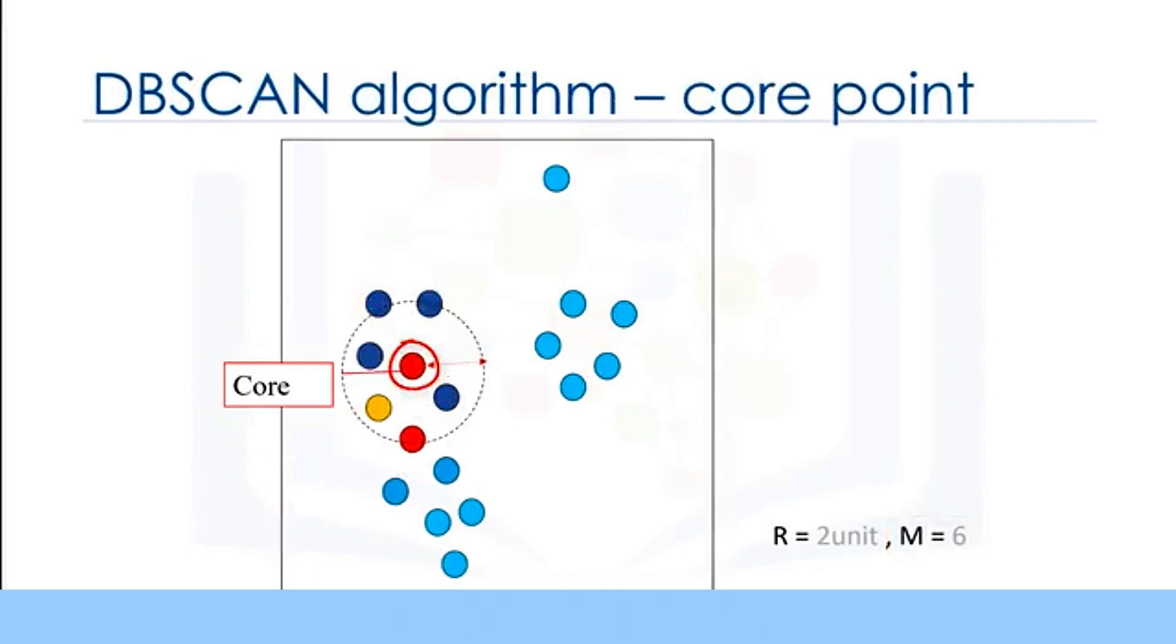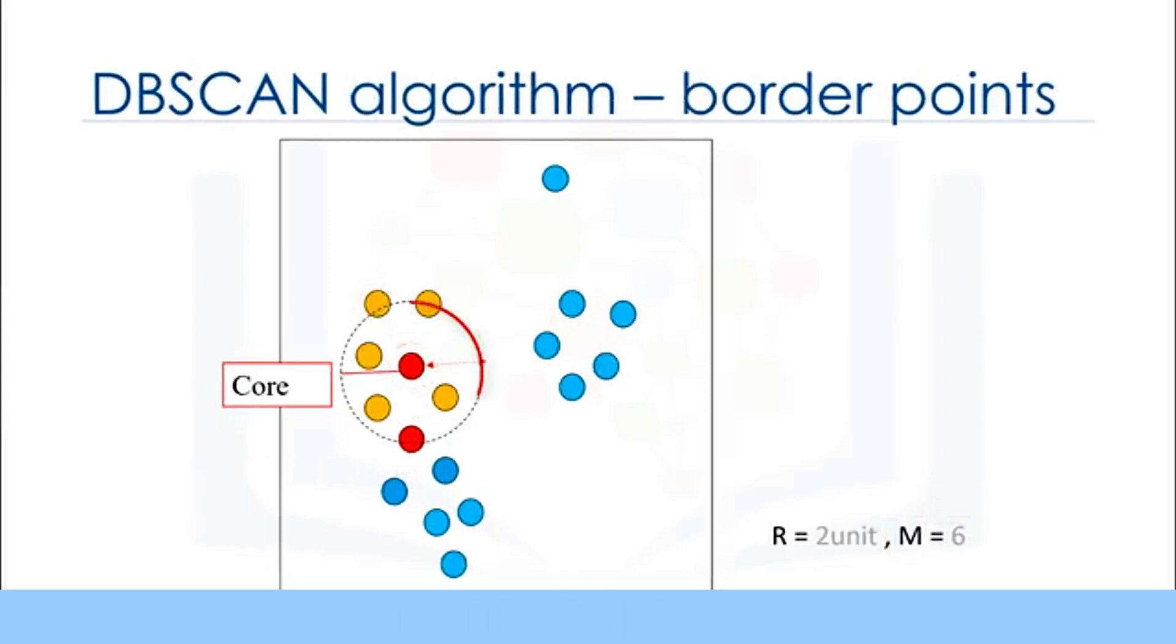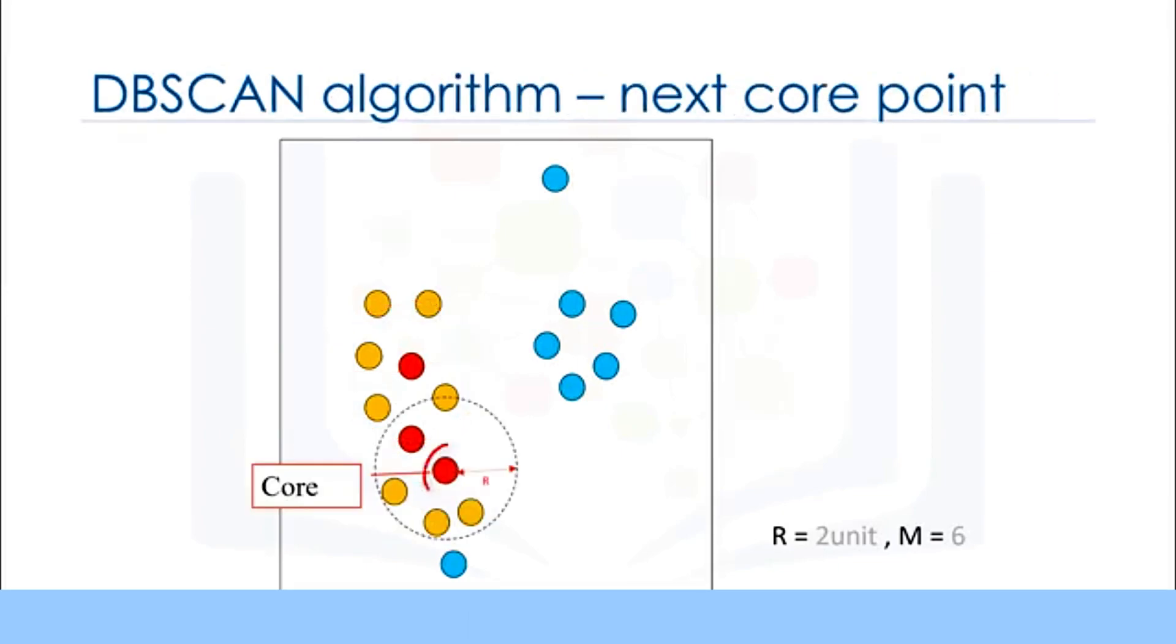We continue with the next point. As you can see, it is also a core point. And all points around it, which are not core points, are border points. Next core point, and next core point.